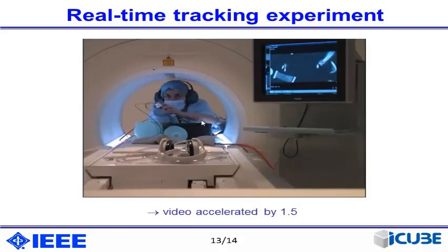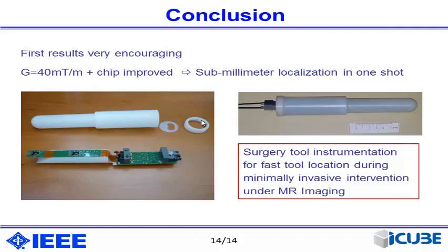In conclusion, these results are very encouraging. All movements were made with a gradient of only 20 mT/m, but we know it is possible to apply twice this value, giving a better signal-to-noise ratio. With improvement of the chip, we expect to achieve 10mm localization in one shot, meaning in 3ms since each gradient is applied for one millisecond. We hope that very soon it will be possible to embed this kind of device inside a catheter, and we are looking for companies interested in the realization of this type of device. Thank you.